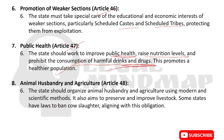Article 48 on animal husbandry and agriculture: the state should organize animal husbandry and agriculture using modern and scientific methods. The state should preserve important livestock. Laws around cow slaughter, for instance, align with these obligations under the directive principles.